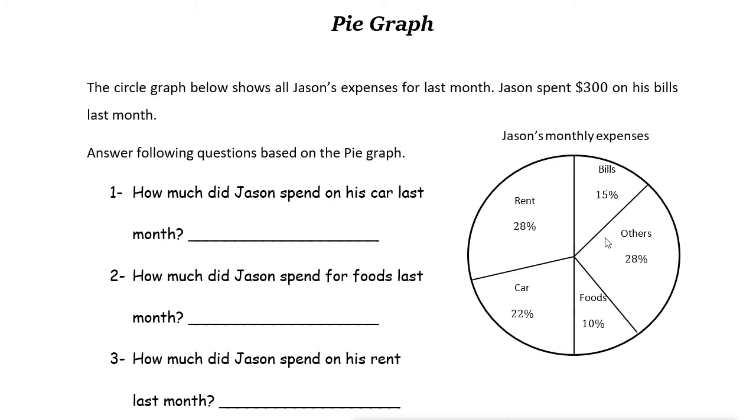Each sector represents the relative size of each value. For example, here we have 28 percent for rent and it is bigger than 15 percent.